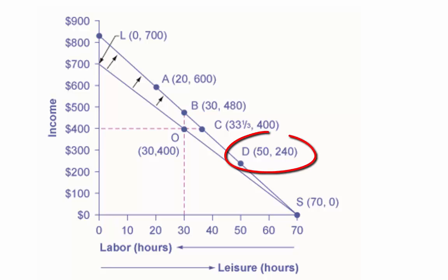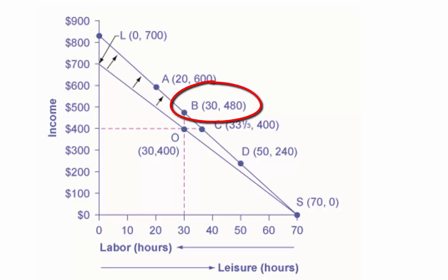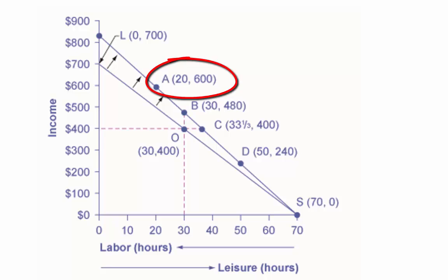A choice like D, which involves less work, and a choice like B, which involves the same amount of work but more income, or a choice like A, which involves more work and considerably more income. Our personal preferences will determine which choice we make.